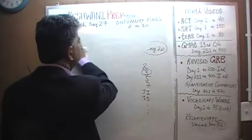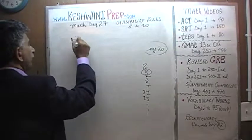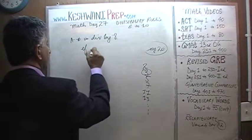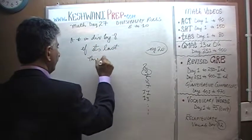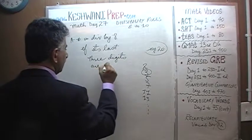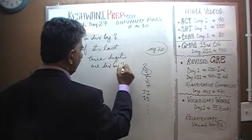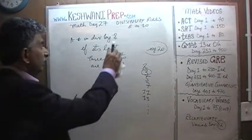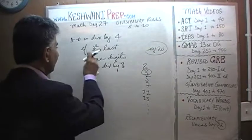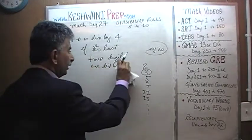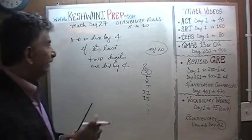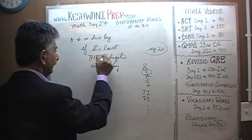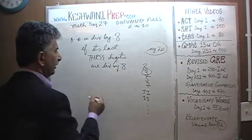Let's move on to 8. A number is divisible by 8 if its last three digits are divisible by 8. This rule is very similar to the rule for 4 — a number is divisible by 4 if its last two digits are divisible by 4. When we're dealing with 8, we have to look at not the last two digits but the last three digits.